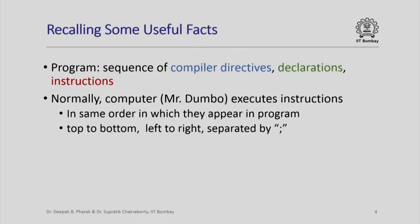Here are some facts that we have already studied. A program is a sequence of compiler directives, declarations, and instructions. Normally, a computer executes instructions in the same order in which they appear in a program. So if you have written the instructions from top to bottom separated by semicolons, the computer will execute them top to bottom.